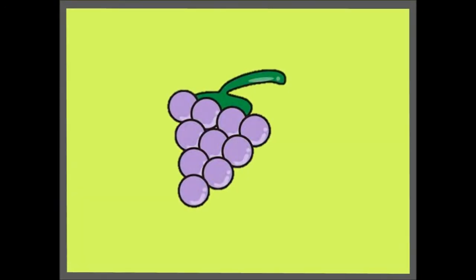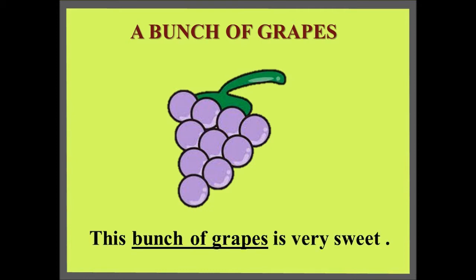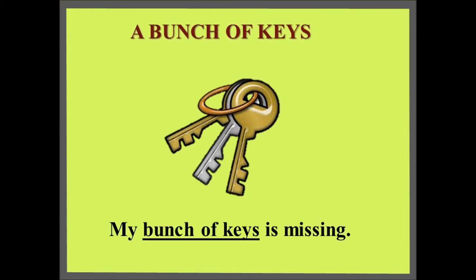Did you know? A group of grapes is also called a bunch. Sentence: This bunch of grapes is very sweet. Also, a group of keys is called a bunch. Sentence: My bunch of keys is missing.